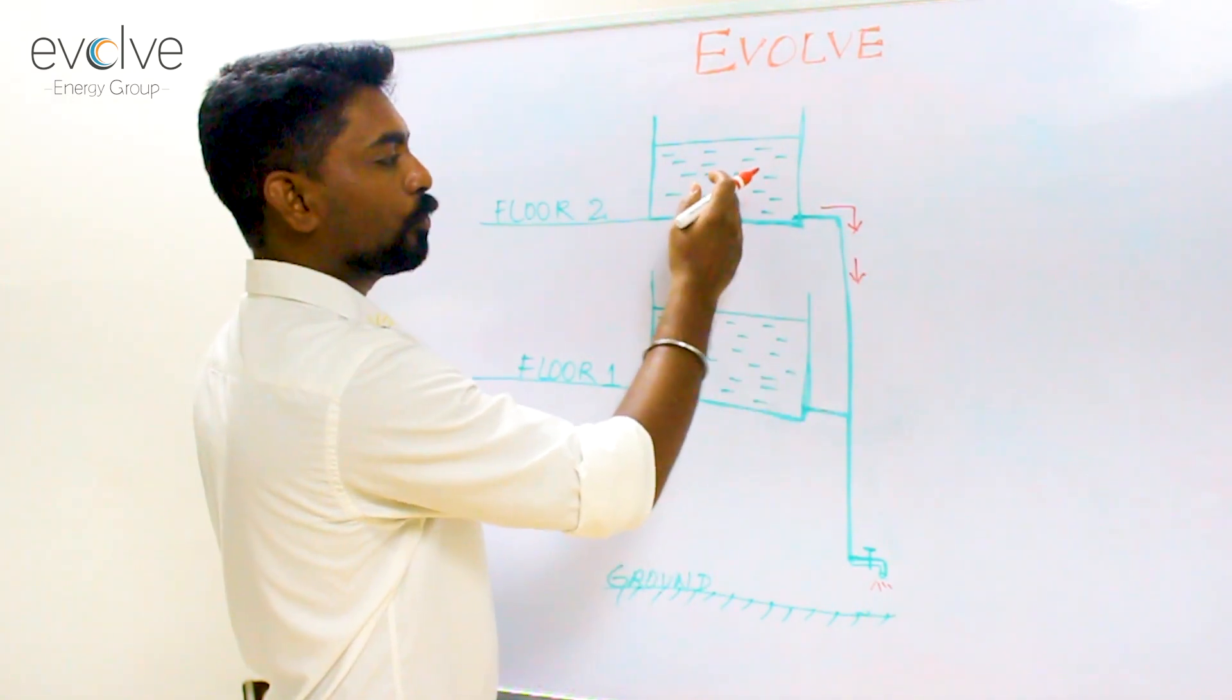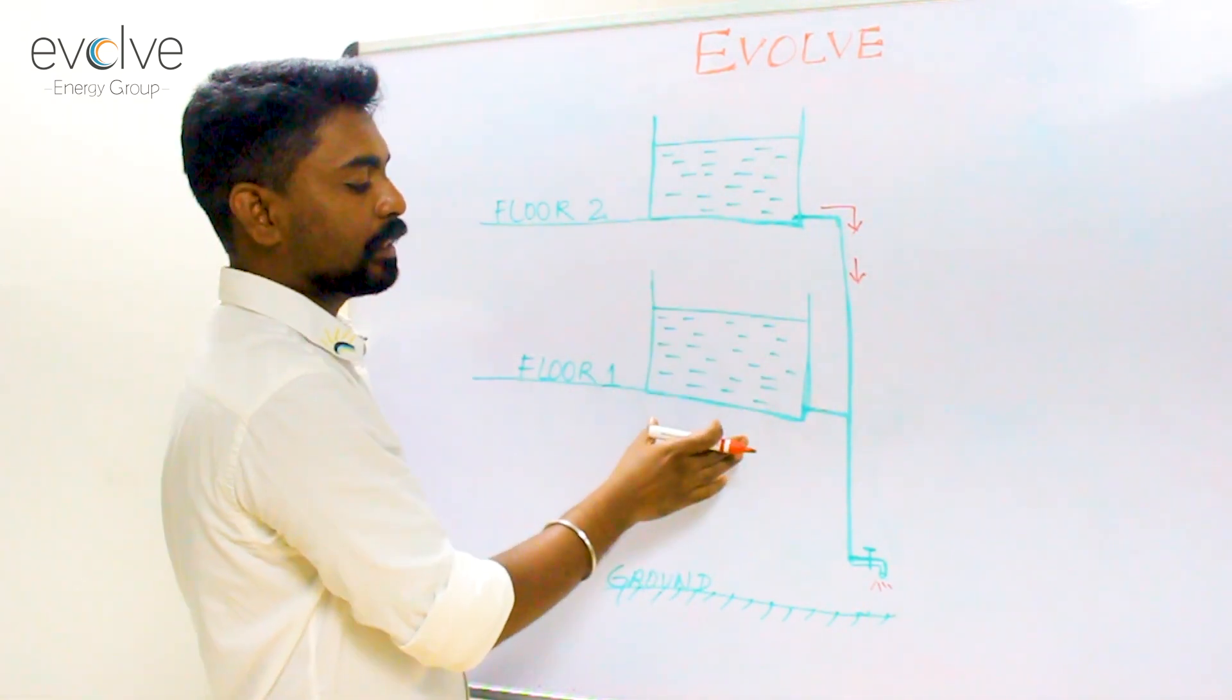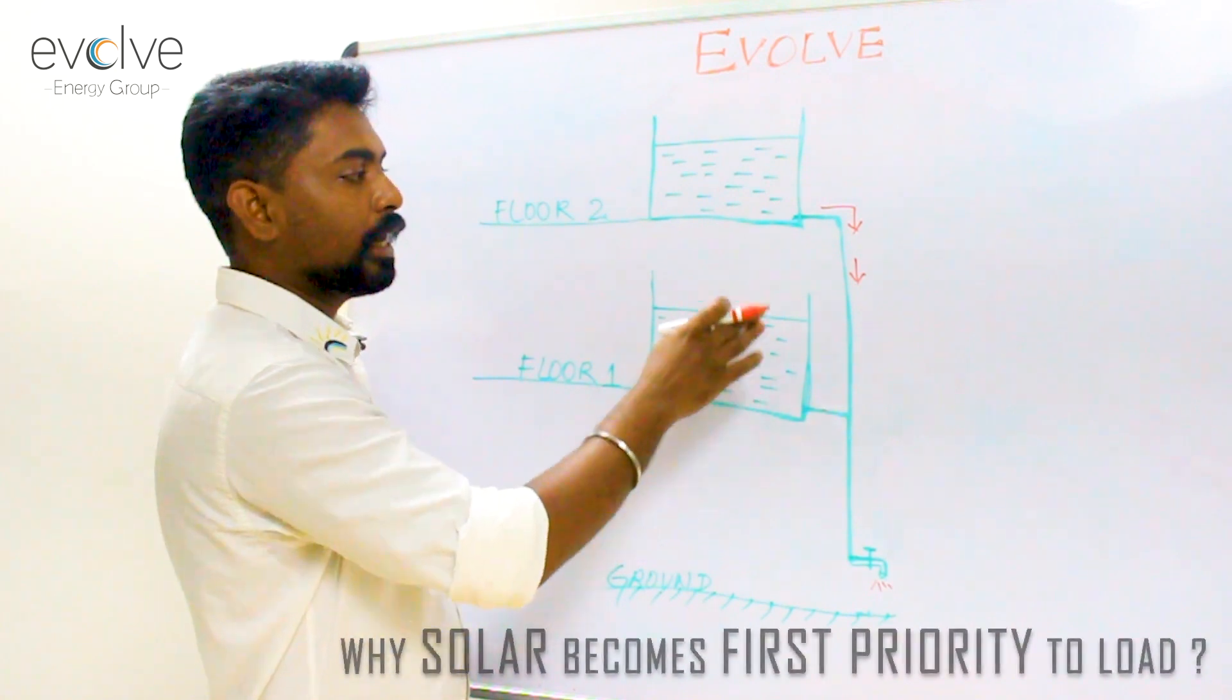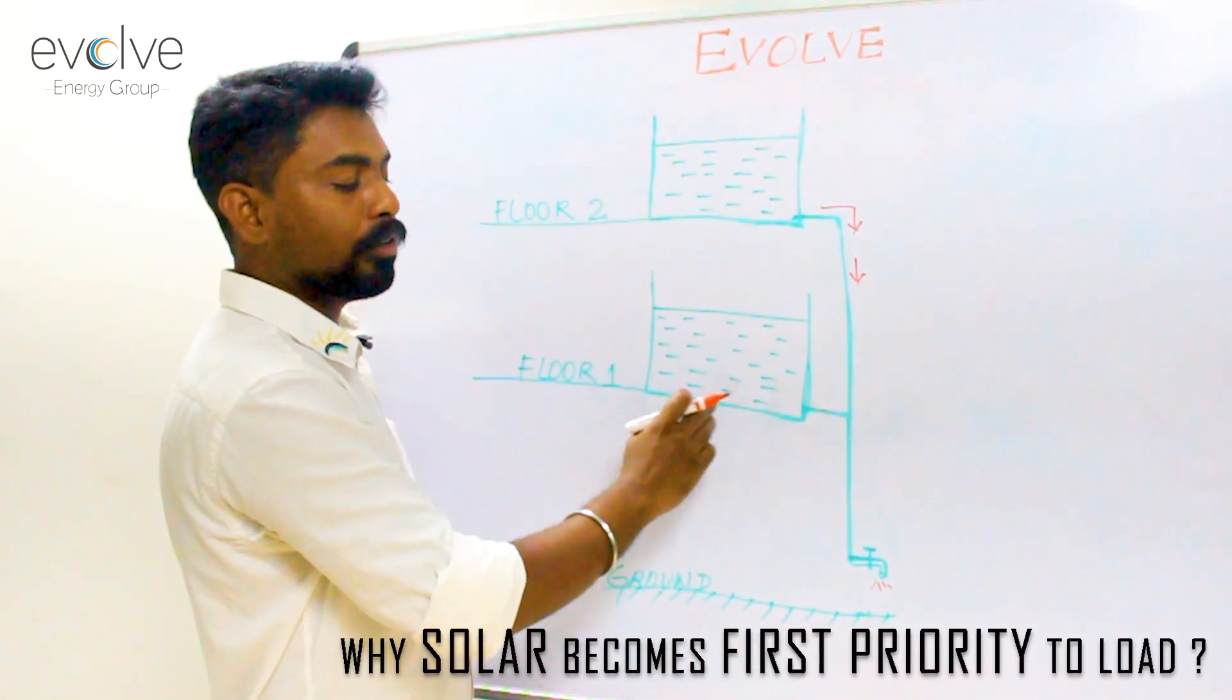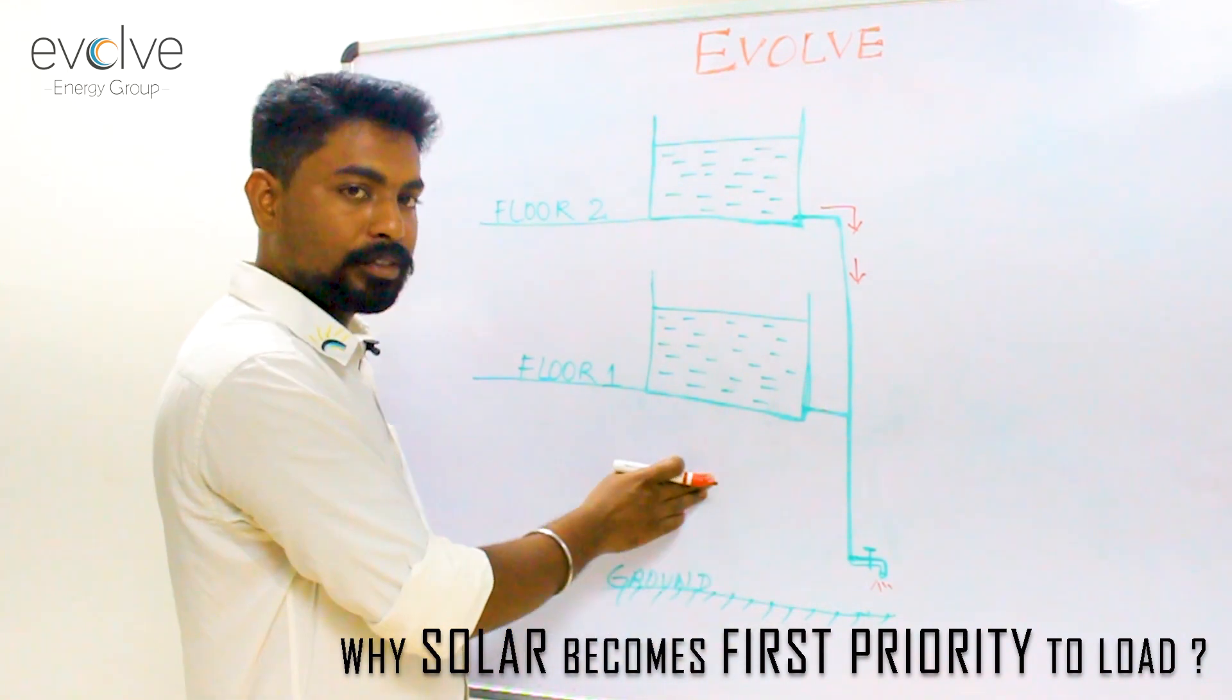The tank on the floor 2 has a higher pressure than the tank which is on floor 1 and tries to empty itself first, then followed by the tank in the first floor.